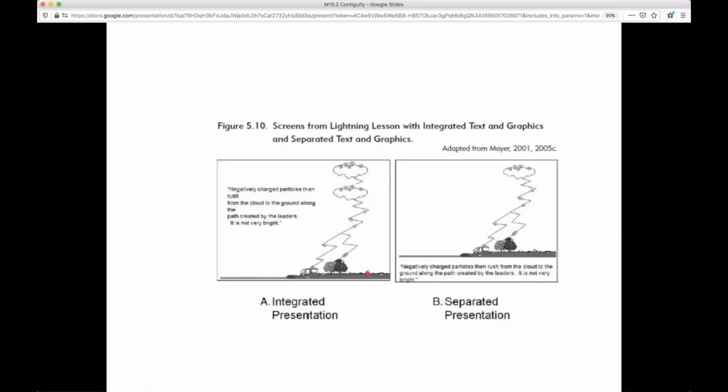So here's an example where in this case it's at the bottom rather than off to the side, but it's away from the picture where this description of negatively charged particles is referring to this part of the image here and isn't close to it. So that's integrated or contiguous and this is separated.